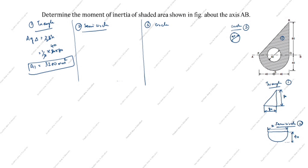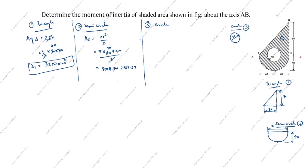The area of the semicircle is A2 = πr²/2. The diameter is 80, so radius r = 40. Calculating: π × 40 × 40 / 2 = 800π = 2513.27 mm². This is A2.